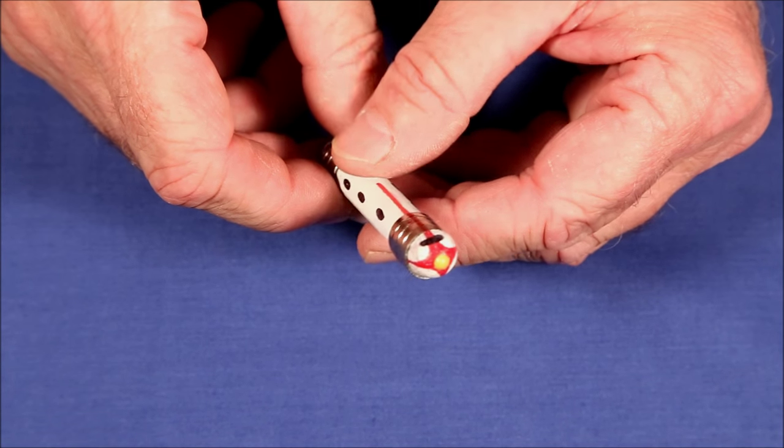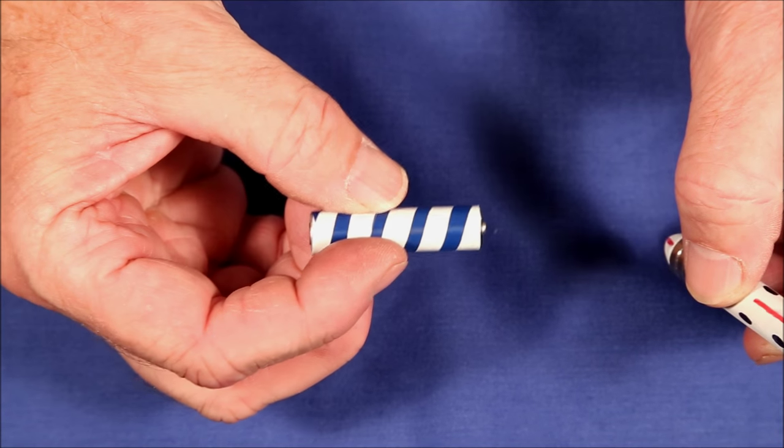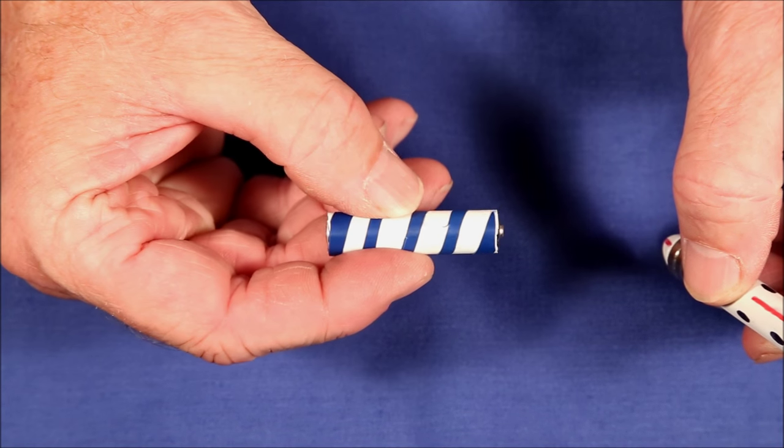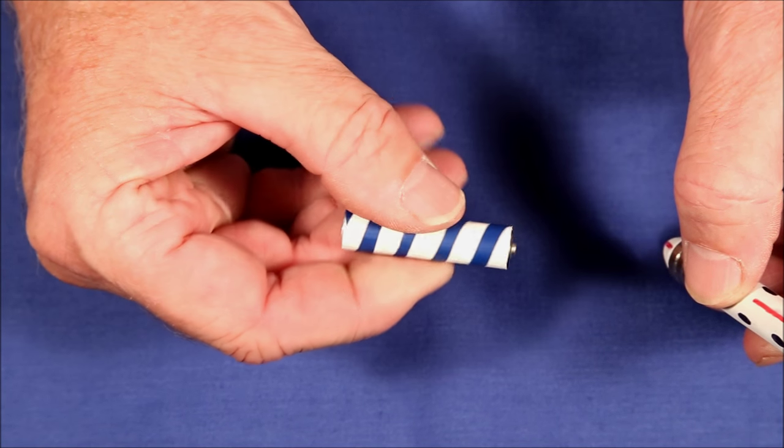One design that's effective is a spiral pattern like this because as the shuttle rotates as it goes down the track, this really emphasizes the rotation.